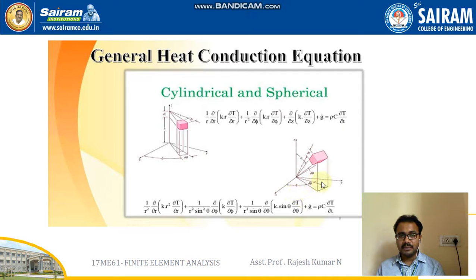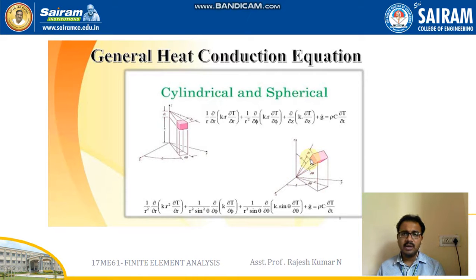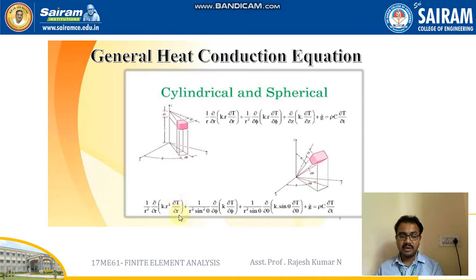For the spherical coordinate system, the same logic applies but with a change in the position of the object. The x, y, z axes translate to the theta axis, where dθ is the smaller angular portion, dz the axial increment, and dr the radial increment. The heat conduction equation for the spherical body is: (1/r²)·∂/∂r(K·r²·∂T/∂r) + (1/r²sin²θ)·∂/∂φ(K·∂T/∂φ) + (1/r²sinθ)·∂/∂θ(K·sinθ·∂T/∂θ) + G = ρ·C·∂T/∂t.